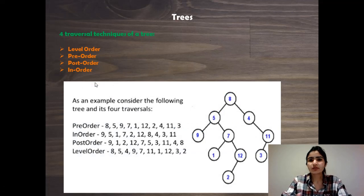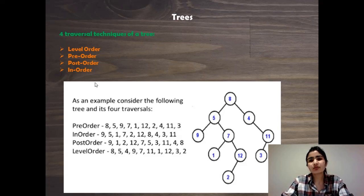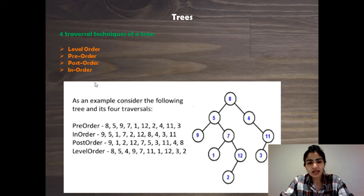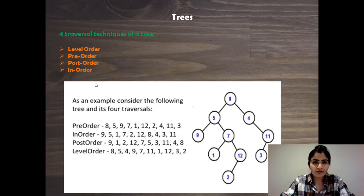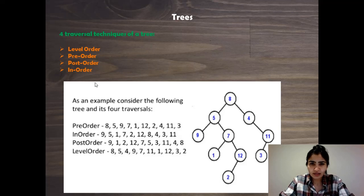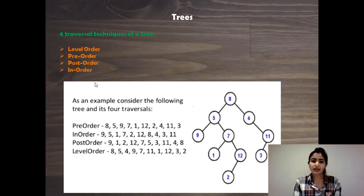Whenever there's a question on trees it's basically about how you traverse the tree — you might use a combination of collections or variables, but it centers on traversal. There are four traversal techniques for a tree. I think this question is an indirect implementation of level-order traversal, because if you do a level-order traversal the elements come out in the exact same order we want the next pointers to point to.